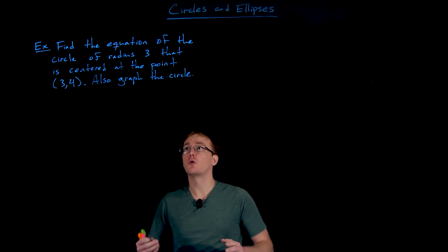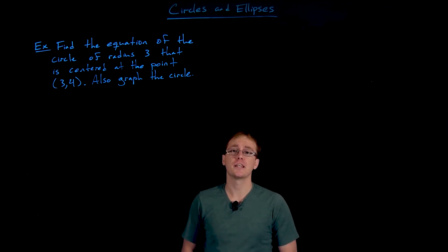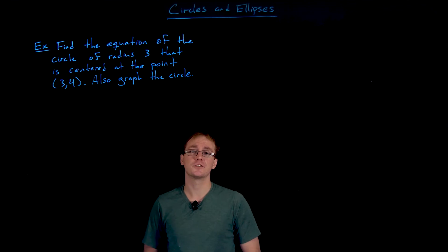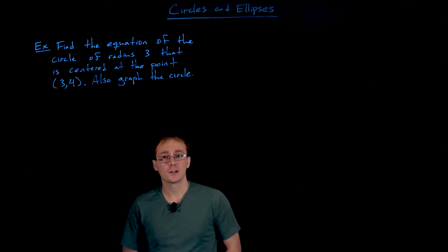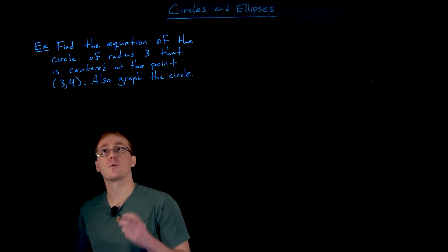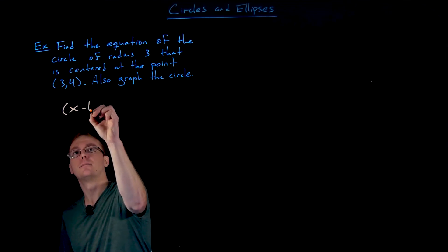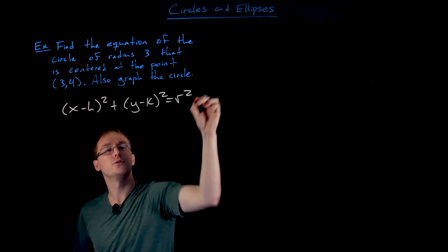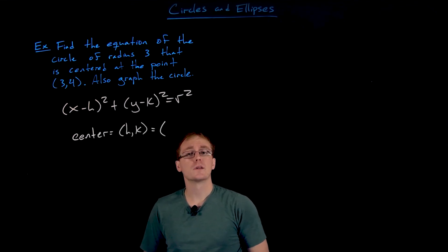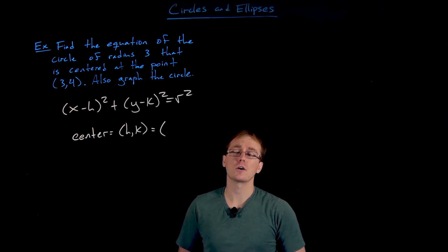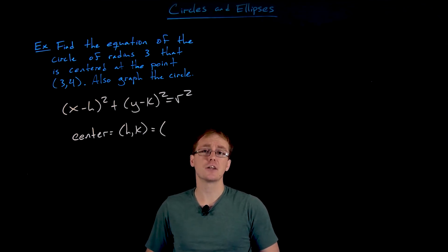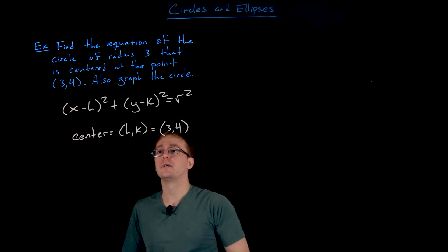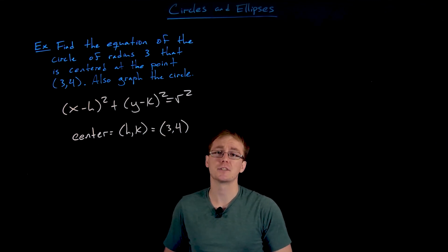In this example, we are asked to find the equation of the circle of radius three centered at the point (3, 4), and then graph it. Starting with the standard form (x − h)² + (y − k)² = r², we know h = 3, k = 4, and r = 3.